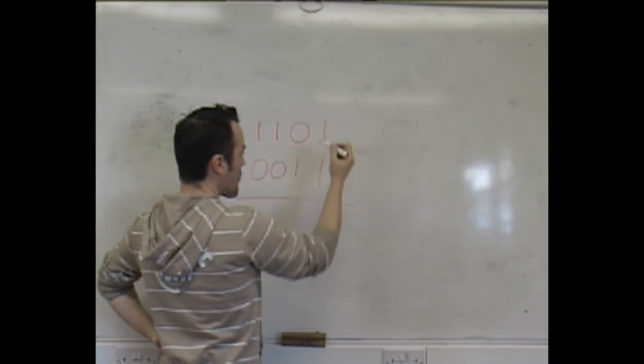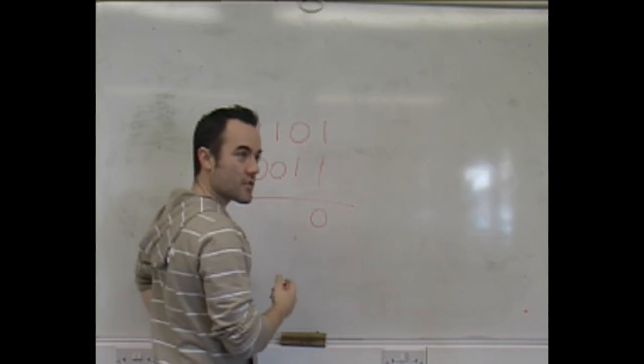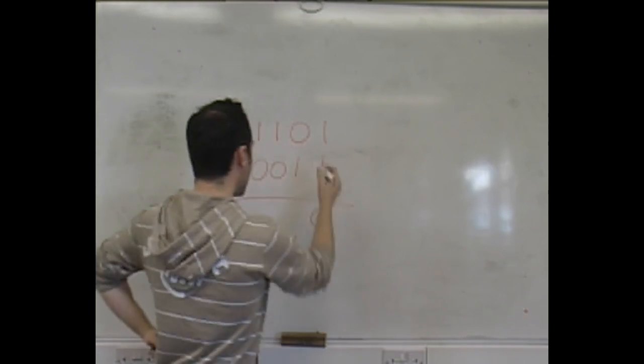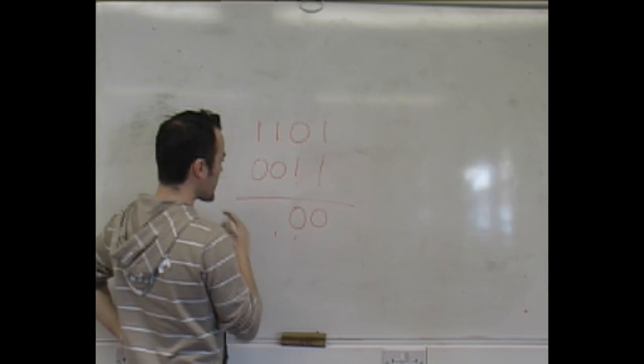Remember from our rules, 1 plus 1 equals 10. So I write a 0 and I carry the 1. Then 0 plus 1 and the carried 1—it's 1 and 1 again—gives 10. Carry the 1.